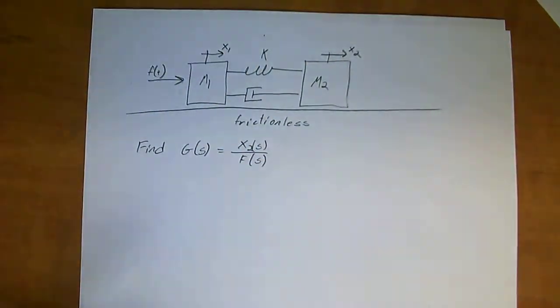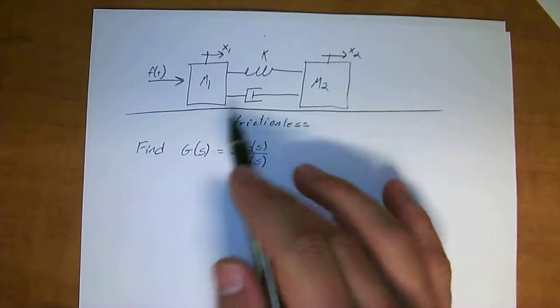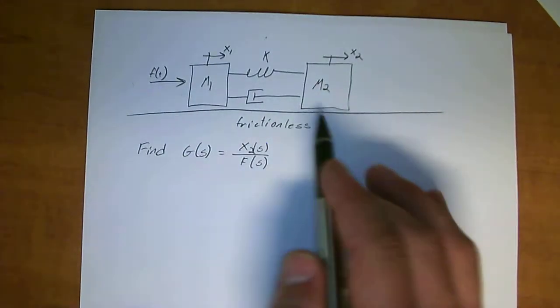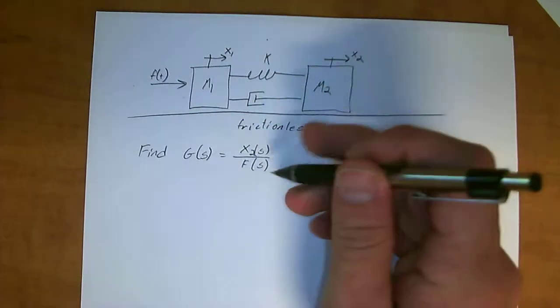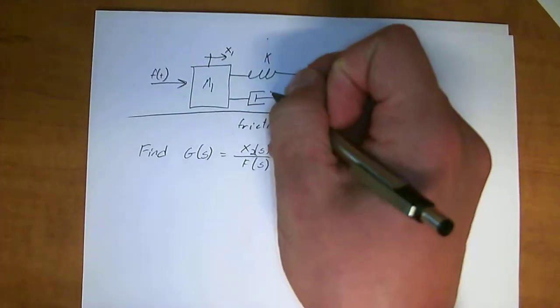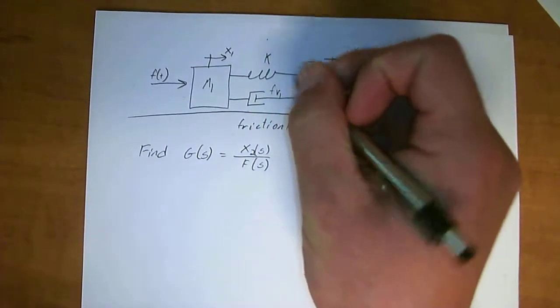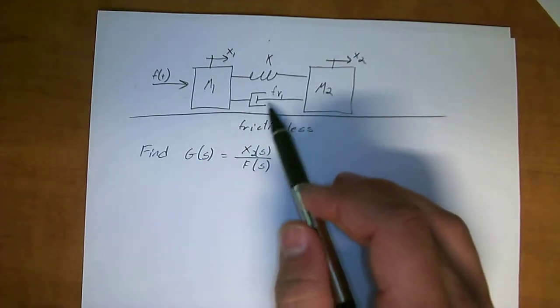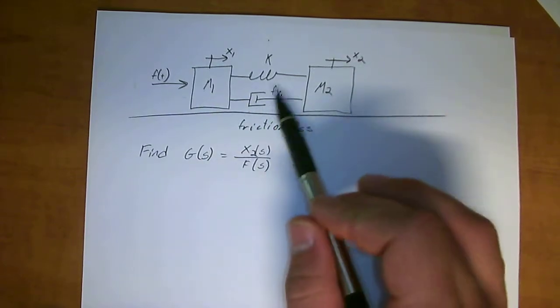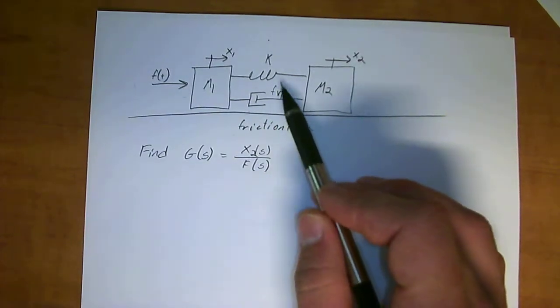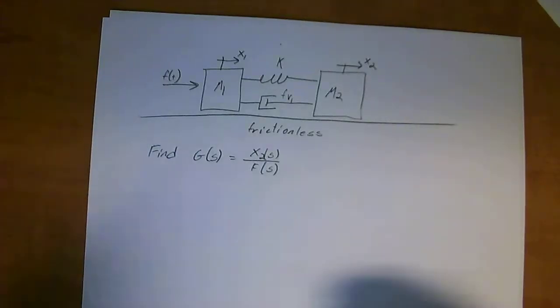So the first thing we have to do for this problem is actually define our differential equations that represent the motion of each one of these blocks. On the surfaces frictionless, we have a spring constant k and a damping constant, we're going to call it f of v1 because a damper is exactly like friction in itself. Usually in these linear systems, the nomenclature is f of v1.